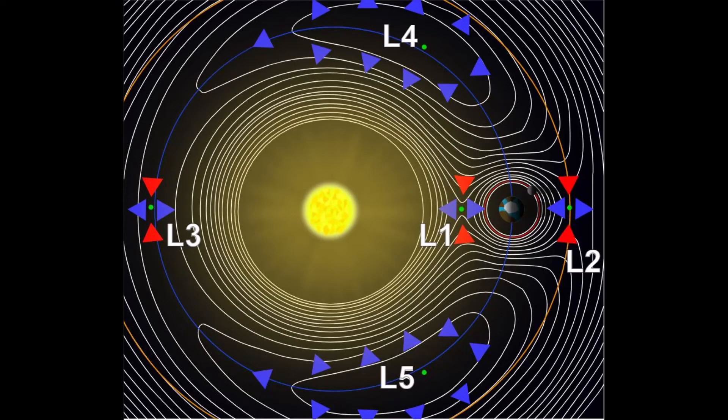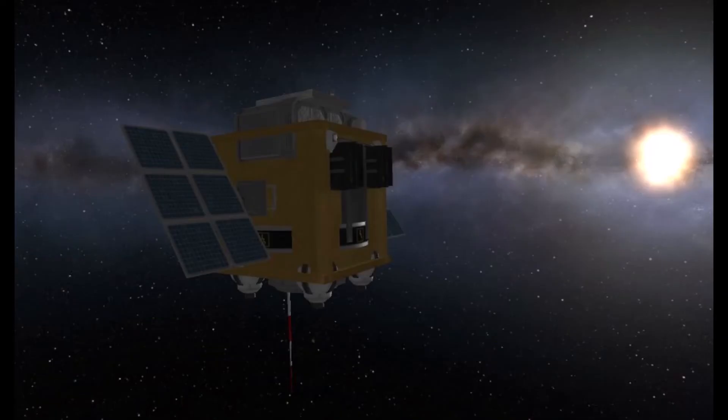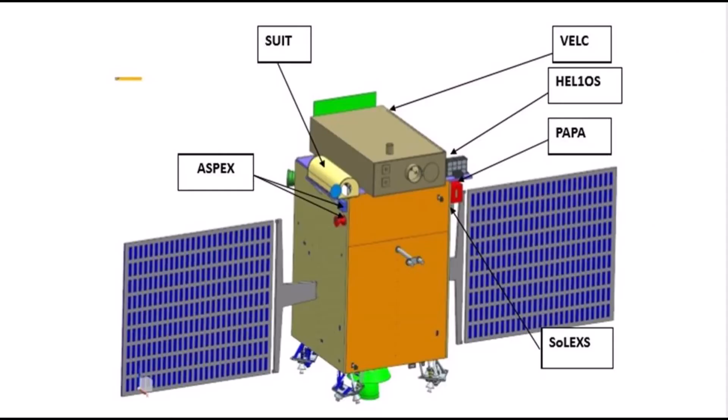L1 point is about 1.5 million kilometers from Earth or about 0.01 astronomical units.